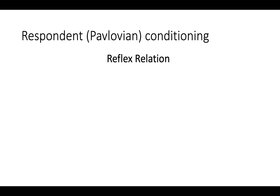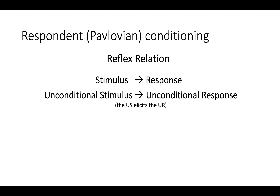When we talk about respondent conditioning, I'm going to start with one form that most of us have had some experience with, and that is Pavlovian conditioning. Pavlovian conditioning always starts with a reflex relation — that is, a stimulus-response relationship. In Pavlov's terms, we call those an unconditional stimulus and an unconditional response. A reflex is something you're born with as a member of the species. An unconditional stimulus is defined as a stimulus that produces an unconditional response without learning. We say the U.S. elicits the U.R.